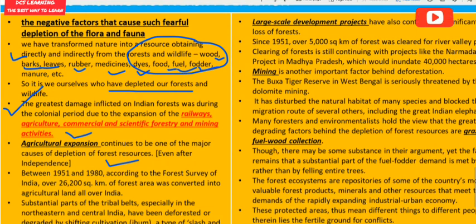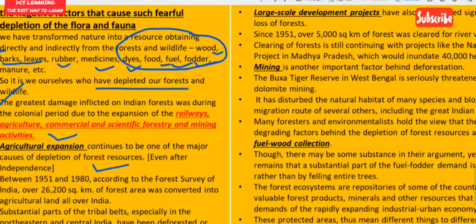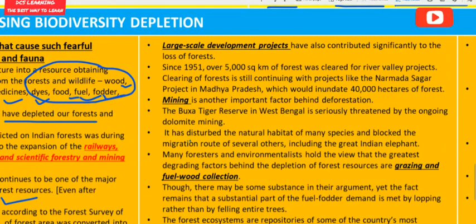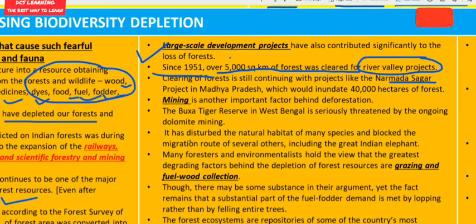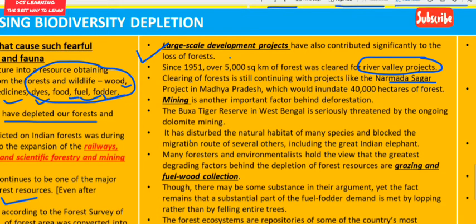Large-scale development projects such as river valley and multi-purpose dam projects like the Morena Sagar project are also major negative factors. Since 1951, over 5,000 km² of forest was cleared for such projects. Clearing continues with projects like the Narmada Sagar project in Madhya Pradesh, which would inundate 40,000 hectares of forest.